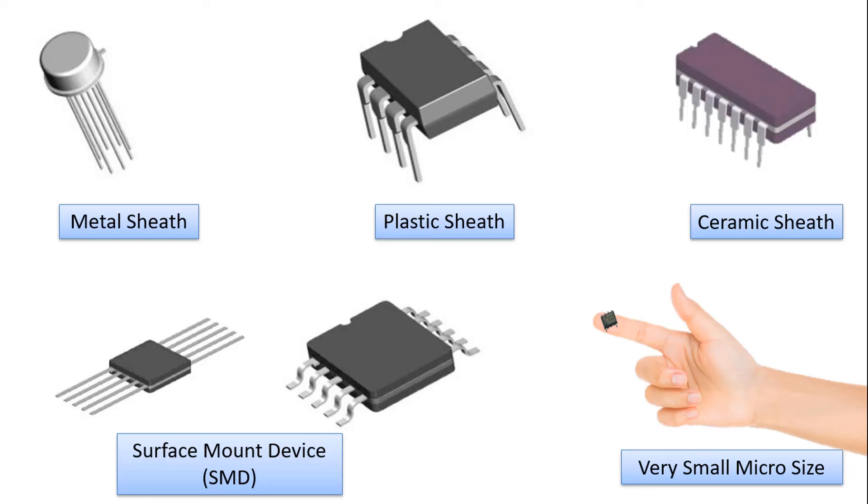As can be seen, operational amplifier ICs are produced in a wide variety of sizes and sheath shapes according to the needs. For example, we may prefer plastic sheathed ICs for circuit elements to be used for general or educational purposes, while SMD or very small microsized op-amp ICs are preferred when it is required to be assembled by automatic machines or to work in extremely congested areas such as mobile phones.